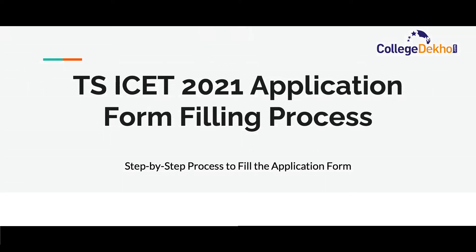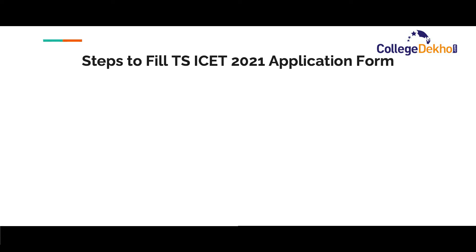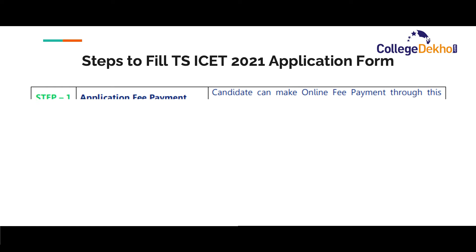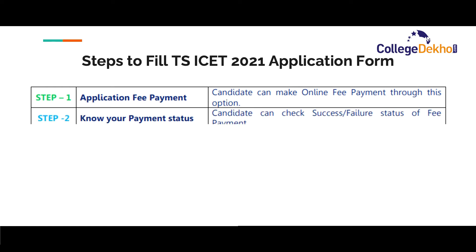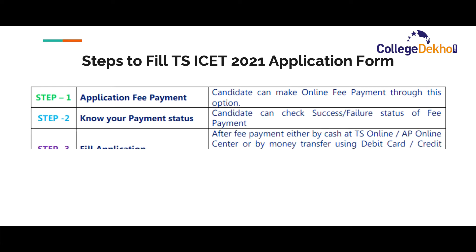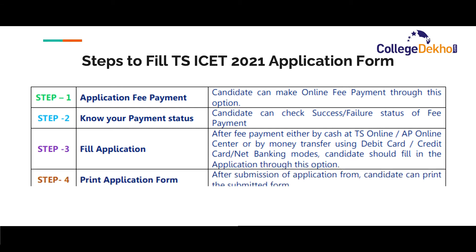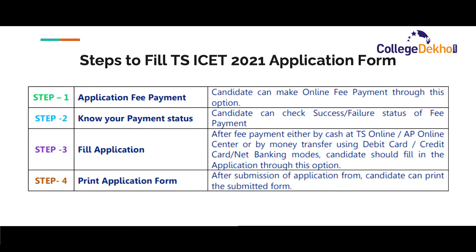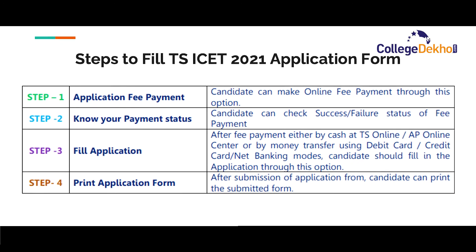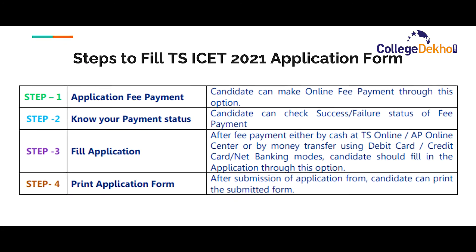The TSISet application form can be filled in four steps. In the first step, candidates have to complete the application fee payment. Then, after confirming their payment status, they can move on to filling the application form. Finally, the candidate must confirm that all details are entered accurately and submit their application. A printout of the submitted form should be taken for future reference. Now let us go through these steps in detail.